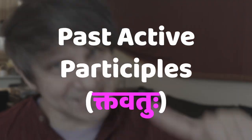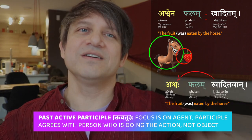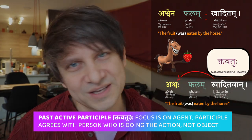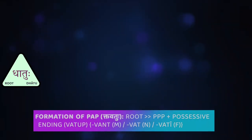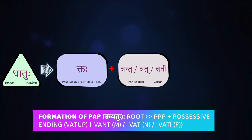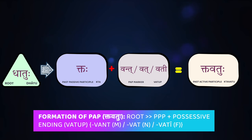In this segment we're going to flip these things back around and learn how to make past active participles, where the focus is once again on the agent — who's doing the action, not the object the action is being done to. This is called the kta vattu in Sanskrit, and it's a very easy form to make once you know how to make the PPP, the kta. We take a root, form a past passive participle, then add one of three endings called the vattu depending on the gender of the agent.